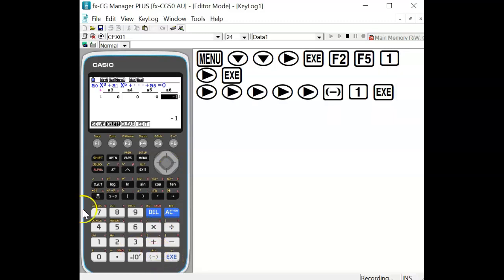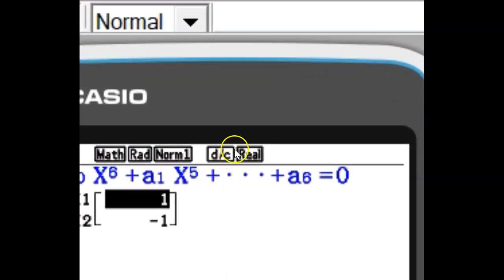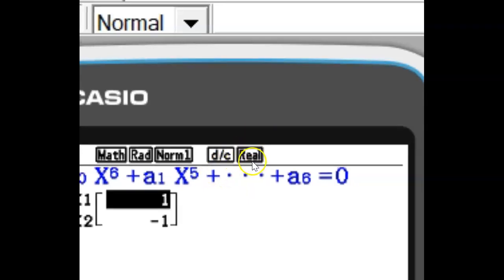Putting this in the calculator and solving, we'll see in this case we only get two solutions, the two real solutions. This is because our calculator is in real mode.